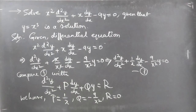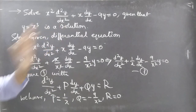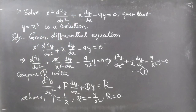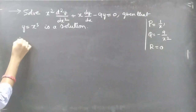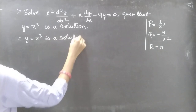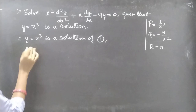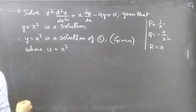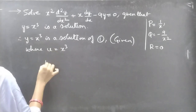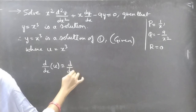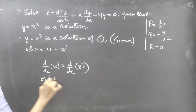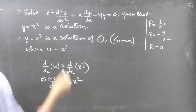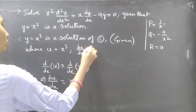We don't need to find the complementary function of equation 1 because we are already given y = x³ as a solution. So u = x³ is given. Therefore y = x³ is a solution of equation 1, where u(x) = x³. Since we have u, we differentiate: du/dx = 3x².